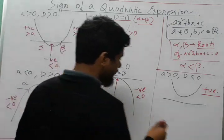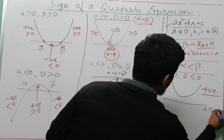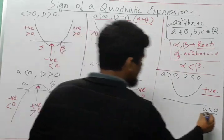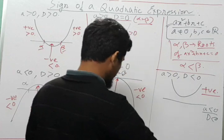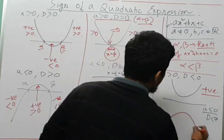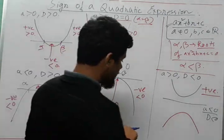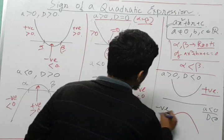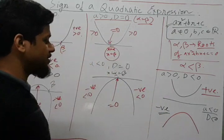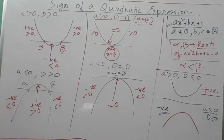A similar case occurs when a is less than 0 and D is also less than 0. In that case we'll have a curve that neither touches nor intersects the x-axis, opening downward. The value of the quadratic expression will always be negative for any value of x. So these are the various concepts associated with the sign of the quadratic expression.